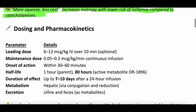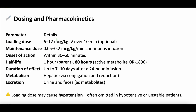Dosing and pharmacokinetics. The loading dose of levosimendan is optional and not often given, but it would be 6 to 12 micrograms per kilogram IV over 10 minutes. The maintenance infusion dose, which is more common, is 0.05 to 0.2 micrograms per kilogram per minute. The onset of action is within 30 to 60 minutes, so it's not immediate — you have to be patient because it takes a little while to kick in.